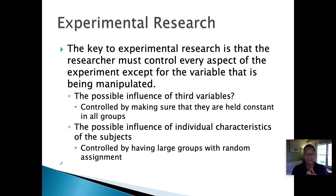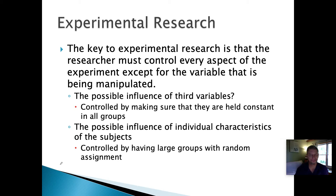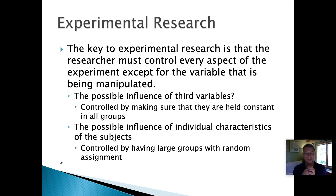The key to experimental research is that the researcher has to control every aspect of the experiment except for the variable that's being manipulated — whatever they're changing. They have to control for third variables by making sure that everything is held constant in all of their groups. You need a control group and an experimental group where you manipulate the variable you're interested in, and then keep everything else the same.